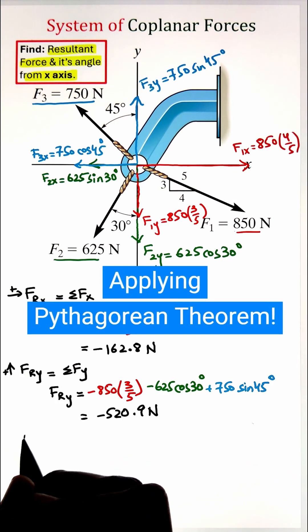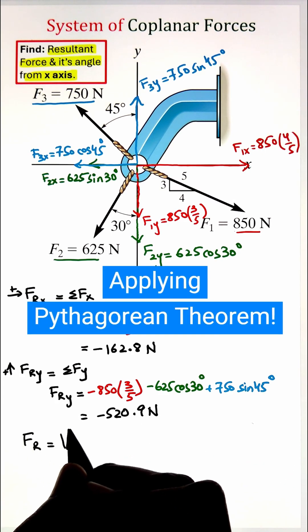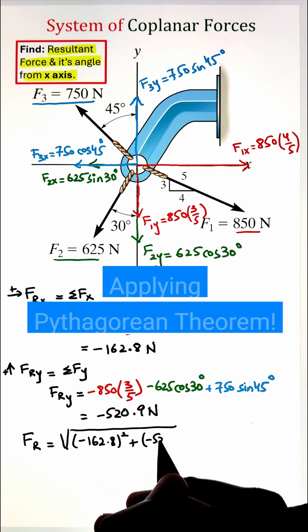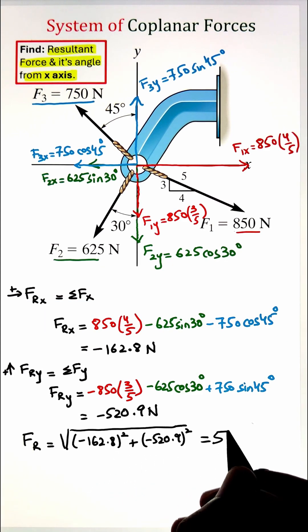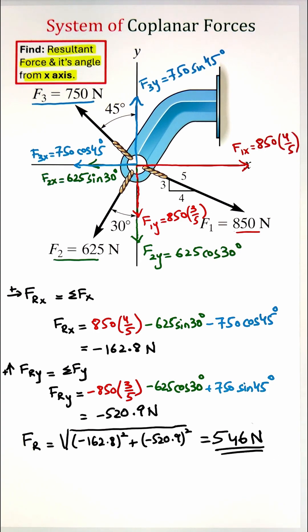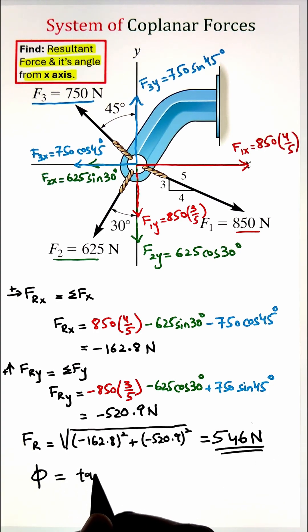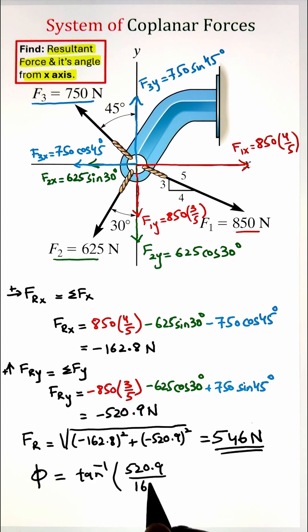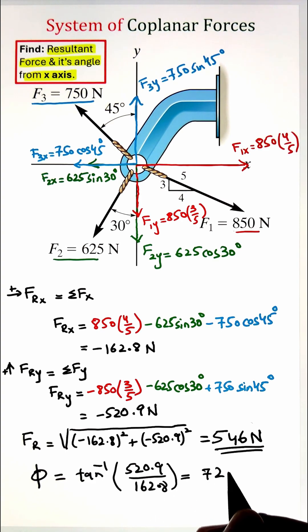Now, once we have these two resultant components, we can combine them using our Pythagorean theorem and figure out our resultant force, which is coming 546 Newton. The angle of this force can be calculated by taking the tangent inverse of Fy over Fx. Here, it is coming as 72.6 degrees.